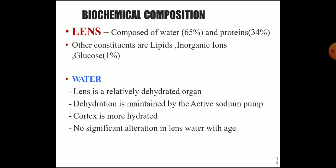The biochemical composition of the lens: it is composed of 65% water and 34% proteins; other constituents — lipids, inorganic ions, and glucose — together constitute 1%. The lens is a relatively dehydrated organ, as dehydration is needed for transparency. Dehydration is maintained by the active sodium pump. The cortex is more hydrated, and there is no significant alteration in lens water content with age.